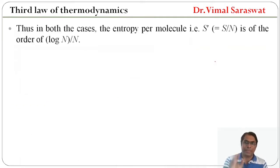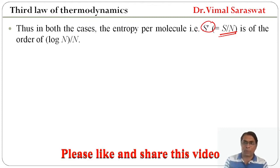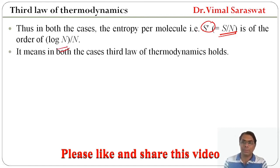Thus, in both cases, the entropy per molecule, that is S prime (S by N), is of the order of log N upon N. It means whether the system has a unique ground state or the ground state is not unique, the entropy per molecule is of the order of log N upon N. In both cases, the third law of thermodynamics holds.